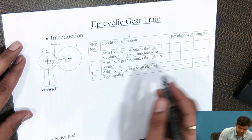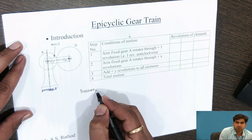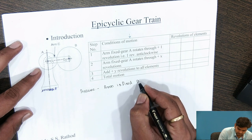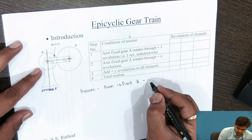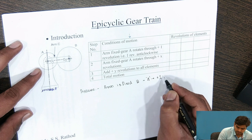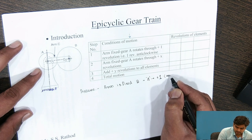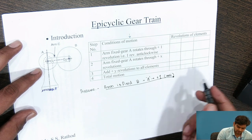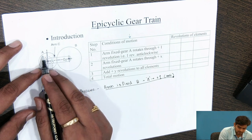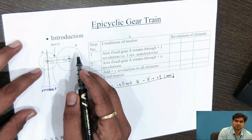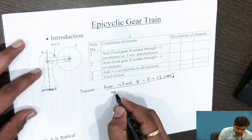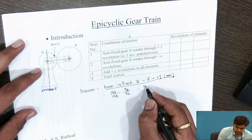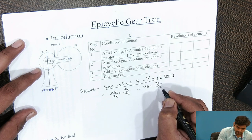In this diagram, if we assume that the arm is fixed and gear A rotates through one revolution — gear A rotates through plus one revolution — we consider the anticlockwise direction as plus. This is the first condition: arm is fixed and gear A makes plus one rotation in anticlockwise direction. As the arm is fixed, if gear A makes one rotation, we can find out the rotation of gear B using the simple gear train relation: speed of A divided by speed of B is inversely proportional to number of teeth, giving TB by TA. Therefore, speed of B equals TA divided by TB into NA.